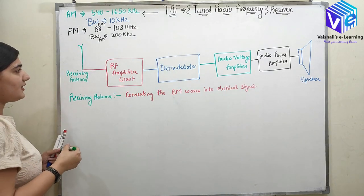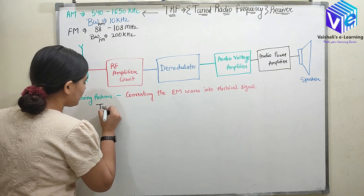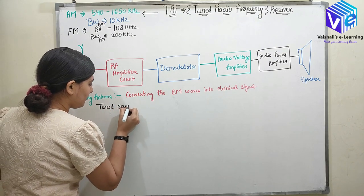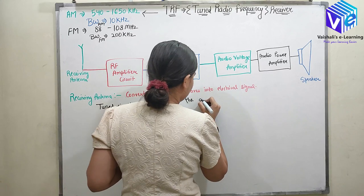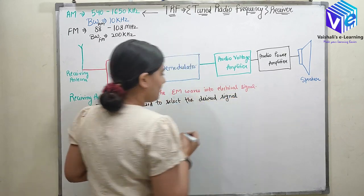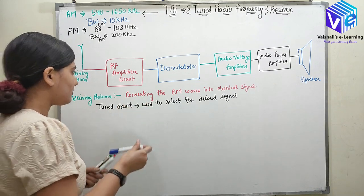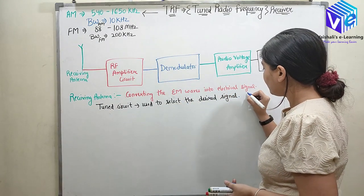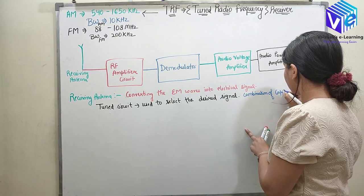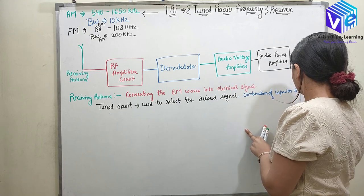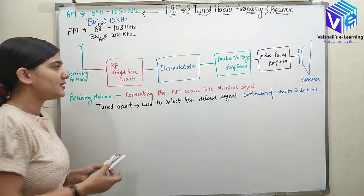After the receiving antenna I have the RF amplifier. As I already said, the RF amplifier has a tuned circuit. The tuned circuit is used to select the desired signal and reject the other signals — it is used for selectivity. The circuit is a combination of capacitor and inductor, and we have a variable capacitor which is used to set the frequency we want to receive.